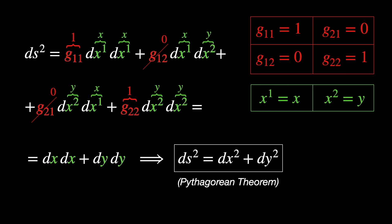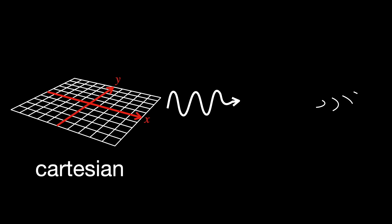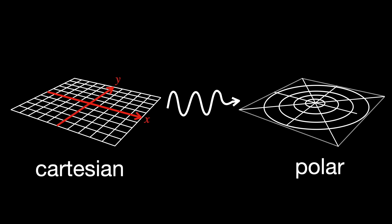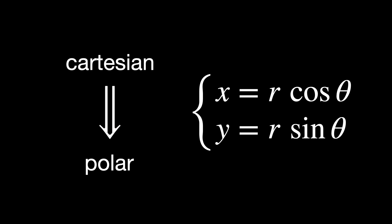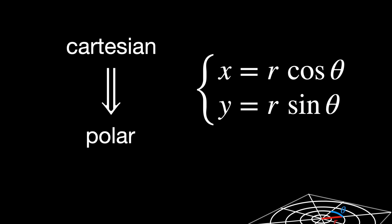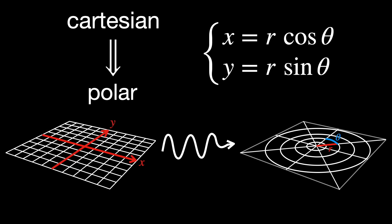Now we want to see the problem from a different perspective. We want to perform a coordinate transformation from Cartesian to polar coordinates. The formulas that translate the coordinates x, y into r theta are these. Notice that the space is still the same.